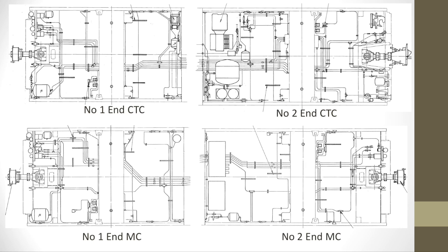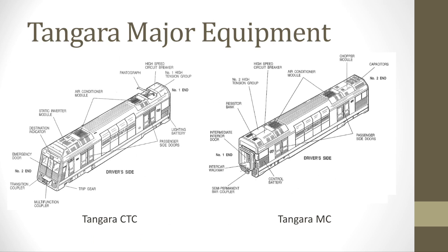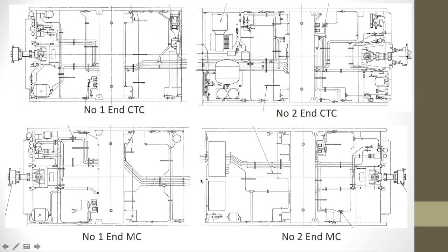Underframe equipment is quite fortunate — the bogeys between the two cars do actually bolt straight onto each other, and redundant items such as compressors on the control trailer cars and main reservoirs provide a lot of space for the equipment from the motor cars. However, there will still need to be some shoehorning as there is much less space on the roof of a control trailer car compared to the roof of a motor car due to the angle in the front.